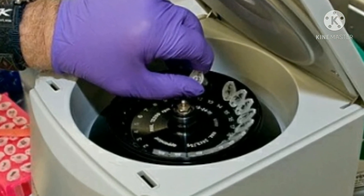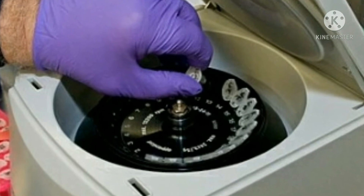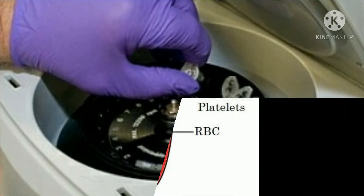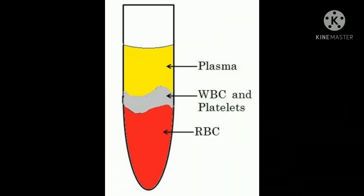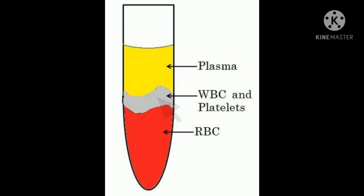Blood components will get divided into three parts. The lowermost part is known as the RBC layer, above that is the WBC and platelets layer, and the topmost layer consists of plasma, which is of yellow color.